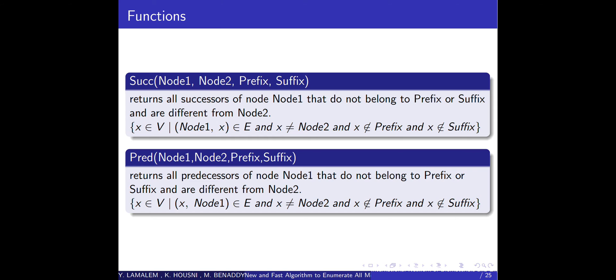Now we have two functions. The first function is called successor that accepts the same arguments as the function createPath. It returns all successors of node1 that do not belong to the prefix or suffix and are different from node2. The second function called predecessor accepts the same arguments and returns all predecessors of node1 that do not belong to prefix or suffix and are different from node2.